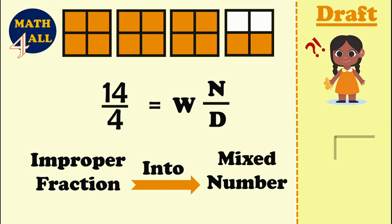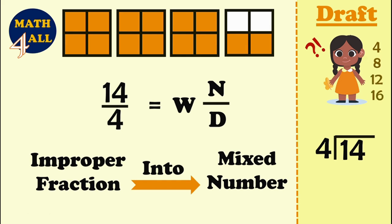You will divide 14 by 4. Let's make a draft. I will write 14 divided by 4 in the long division. To do this, search for the nearest number to 14 in the table of 4: 4×1=4, 4×2=8, 4×3=12, 4×4=16. Since 16 is more than 14, the nearest number is 12, which means 4×3. So 14 divided by 4 is 3.